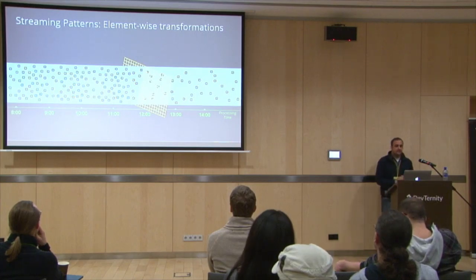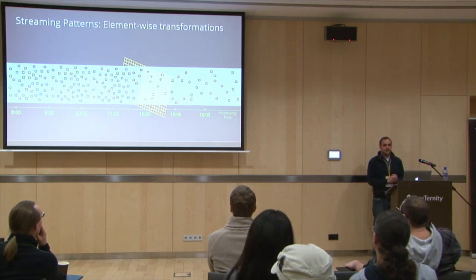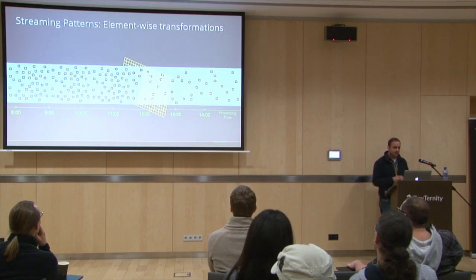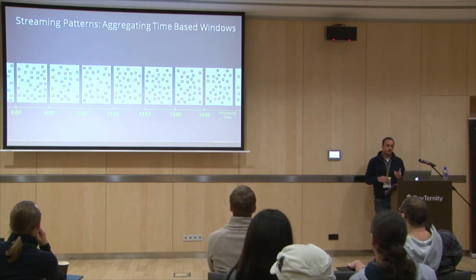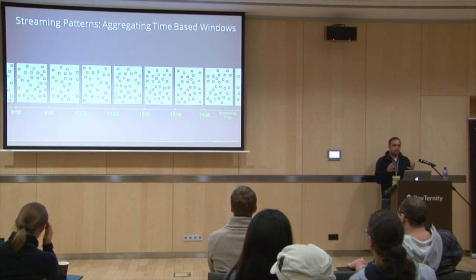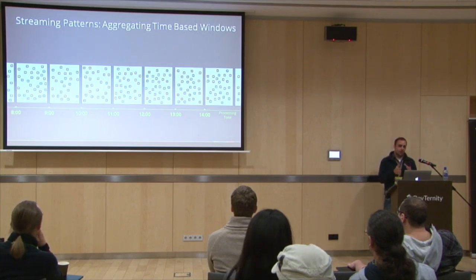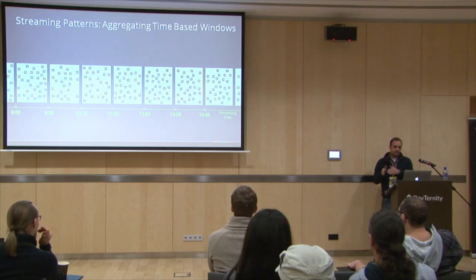In streaming, some things are easy. If you want to do element-wise transformation like filtering, as data comes in you apply the filtering function at that point in time. But if you want to do aggregation, you need windowing. The reason is because data is coming in all the time, so at some point you need to decide: this is the window of data I want to apply aggregation to. For example, we can apply a window of one hour and chunk our streaming data into one-hour chunks.